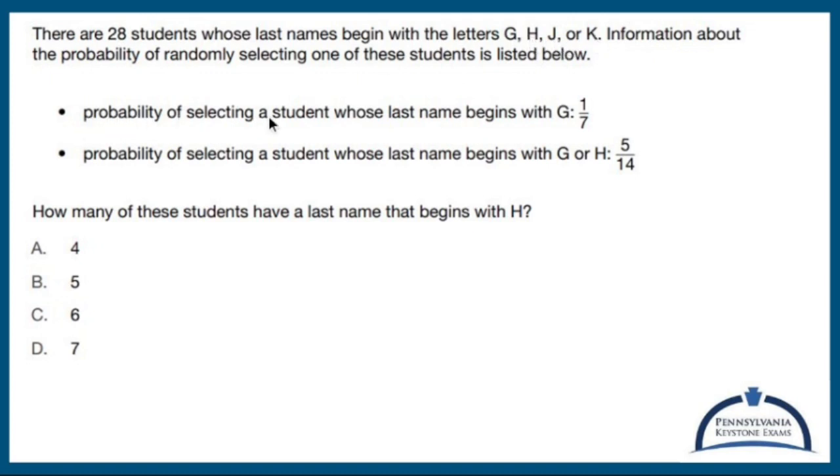The probability of selecting a student whose last name begins with G is one out of seven. What does that mean? Well, if there's 28 students that fall under this category and one out of seven is a G, one-seventh times 28 means four kids have the last name that start with a G.